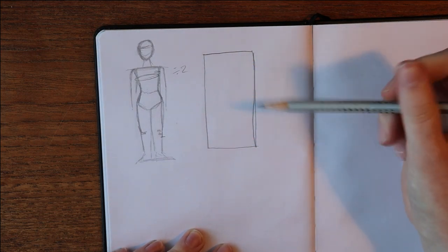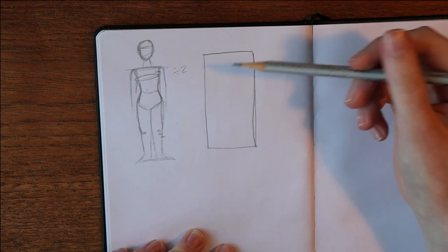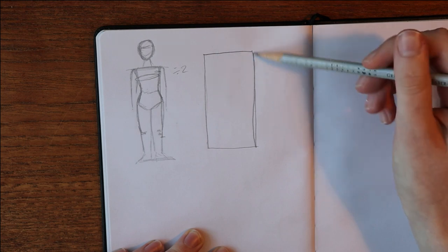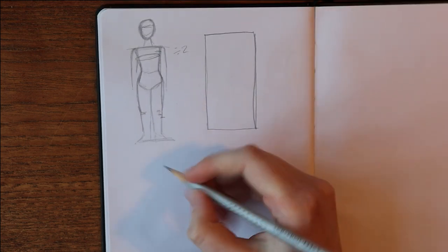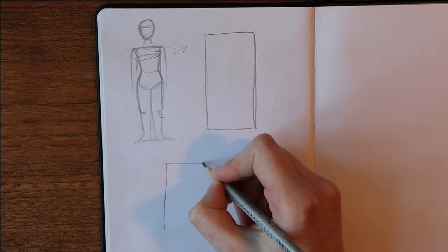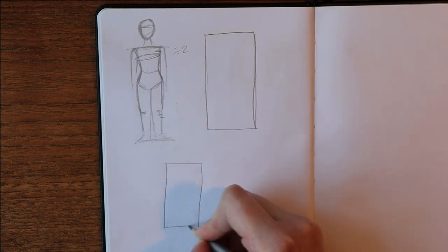So the front and back pieces are exactly the same. So you are going to cut two of these rectangles and then place them on top of each other.